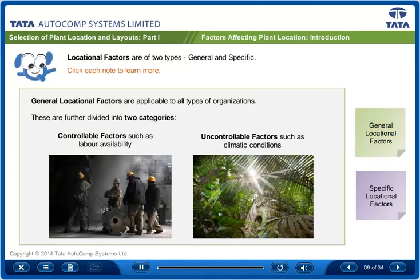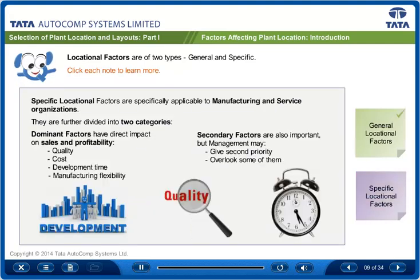General locational factors are applicable to all types of organizations. These are further divided into two categories: controllable factors such as labor availability, and uncontrollable factors such as climatic conditions. Specific locational factors are specifically applicable to manufacturing and service organizations. They are further divided into two categories: dominant factors and secondary factors.